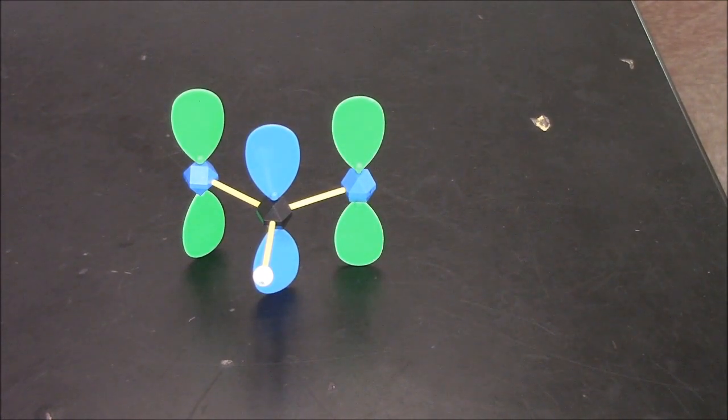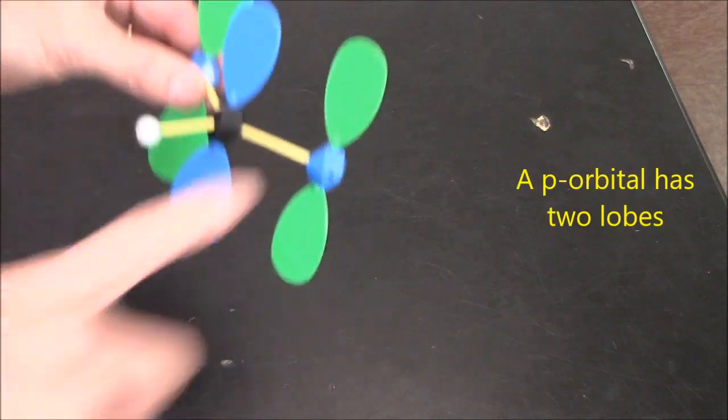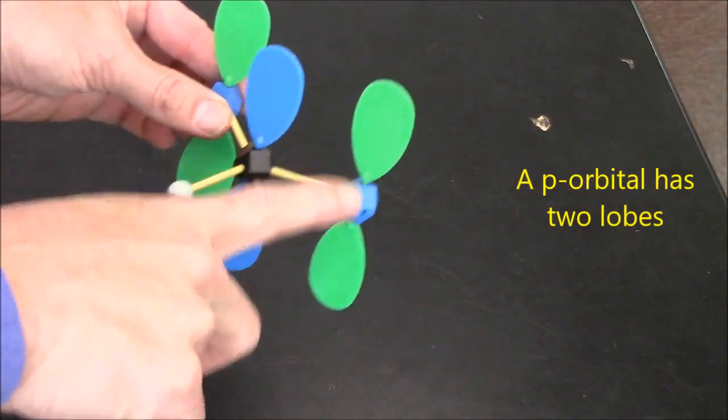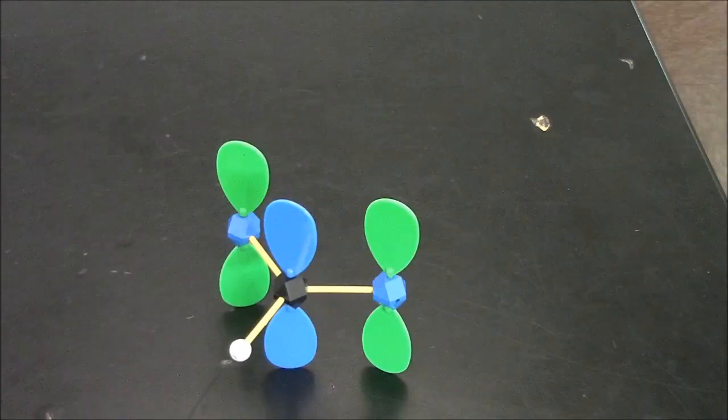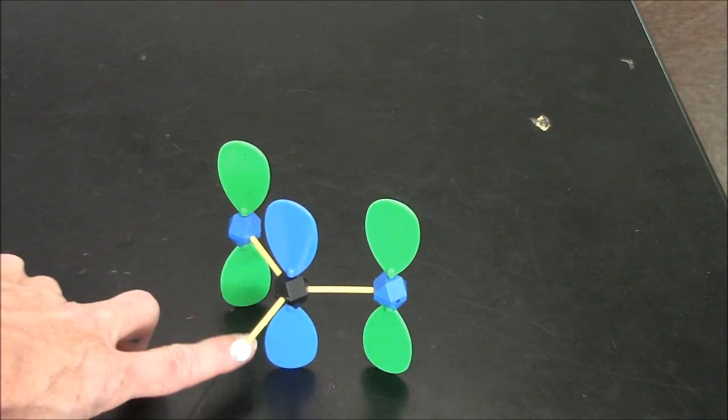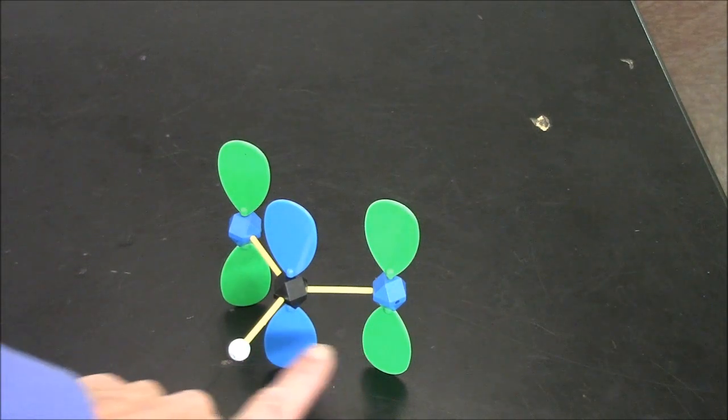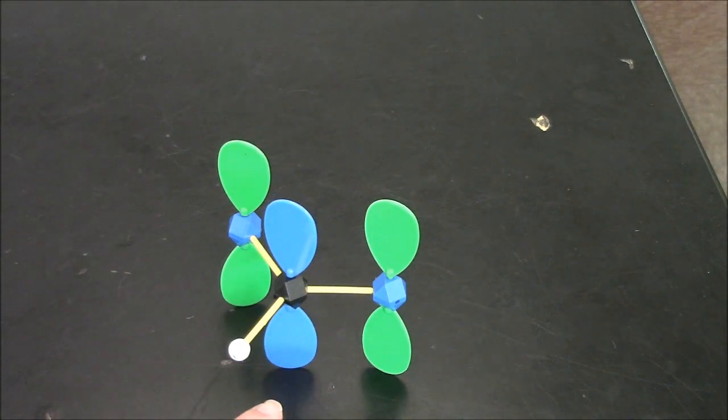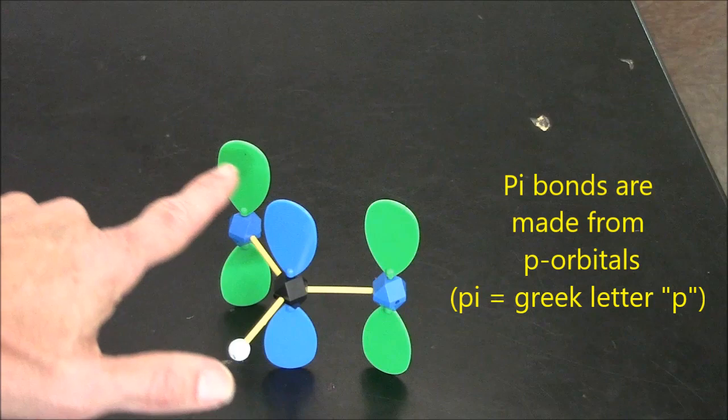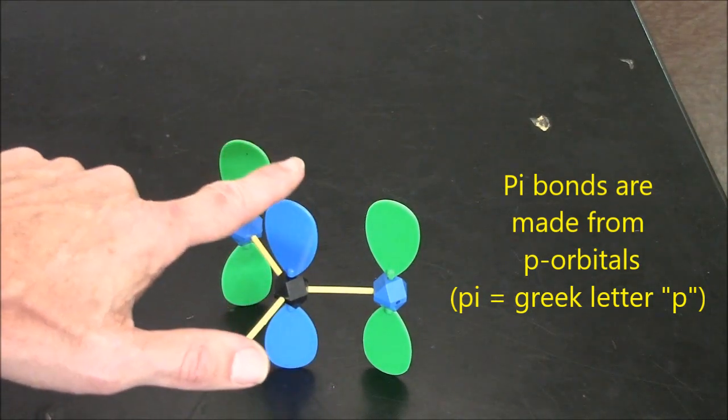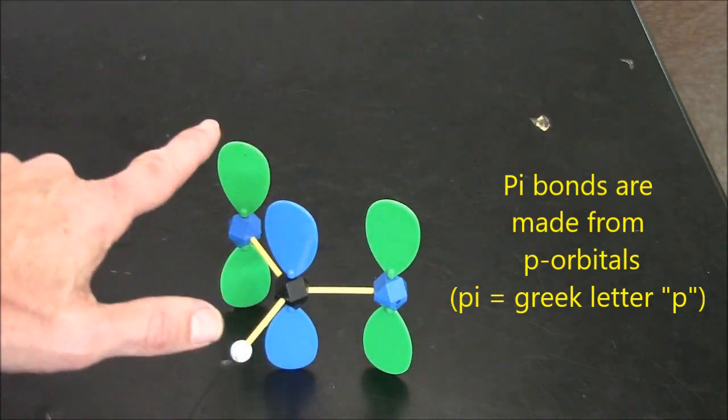Resonance is satisfyingly modeled with orbitals. You may recall that this is a representation of a p orbital. When p orbitals line up on adjacent atoms, you can create a double bond. It's called a pi bond. But in the structures that you've seen, like the carboxylate ion, it's symmetric.